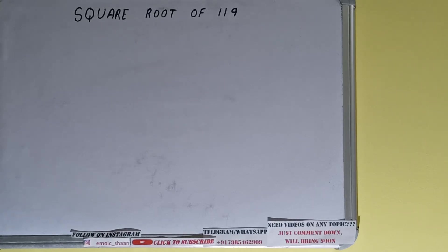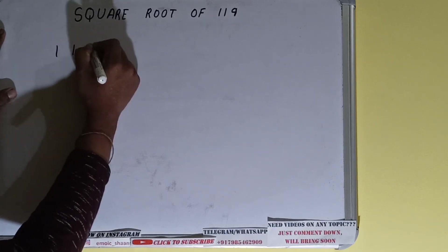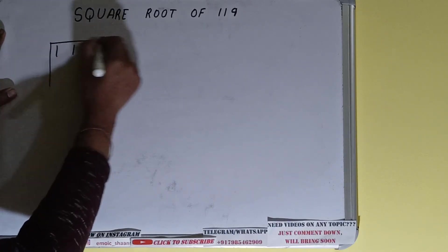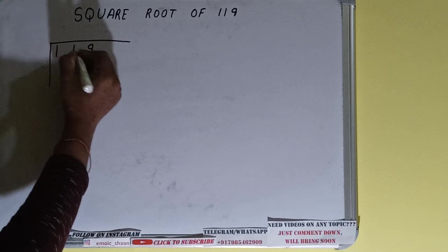Hello friends, in this video I'll be helping you with the square root of the number 119. We'll be using the division method to find it. First, we need to write the number, and then form pairs from the right-hand side.